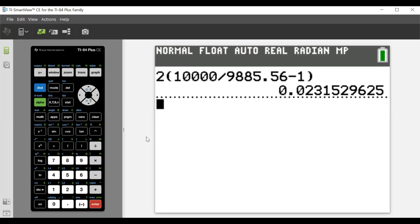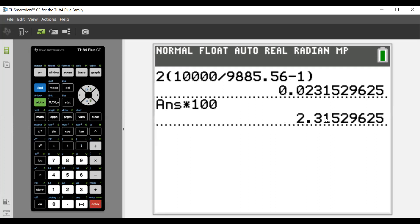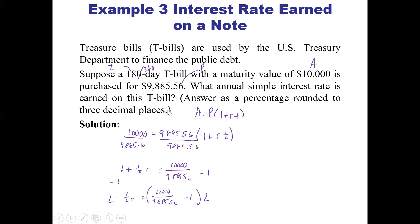Now, this is as a decimal. So remember, we want it as a percent. So let's multiply by 100. So that's 2.31529. They wanted it to three decimal places, so that would be 2.315. So our R is equal to 2.315%. And that would be our answer rounded to the three decimal places.